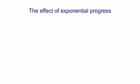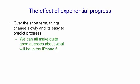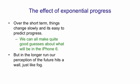The development of technology is also typically exponential. So over the short term, things appear to change fairly slowly, and it's easy to predict progress. All of us, for example, can probably make quite good guesses about what will be in the iPhone 6. But in the longer run, our perception of the future hits a wall, just like with fog.